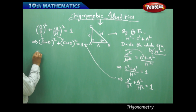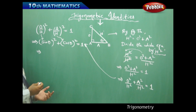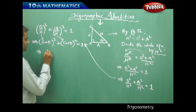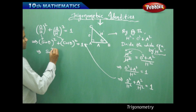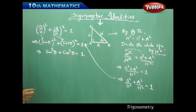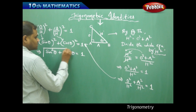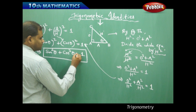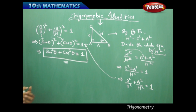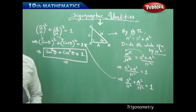The notation rule for trigonometric powers is that we don't write (sin θ)² but rather sin²θ. So sin²θ + cos²θ = 1, where sin²θ means sin θ × sin θ and cos²θ means cos θ × cos θ. This is the first trigonometric identity connecting sine and cosine.